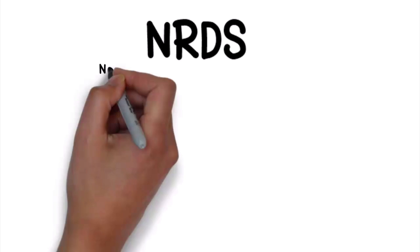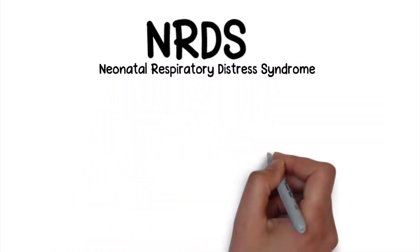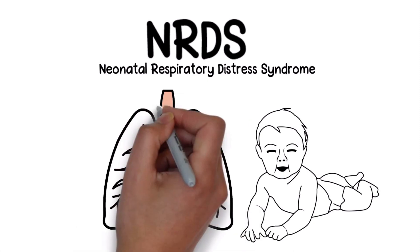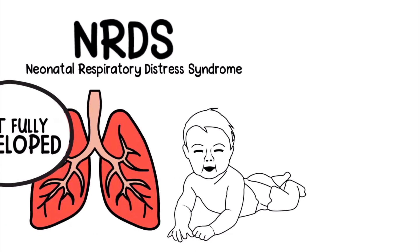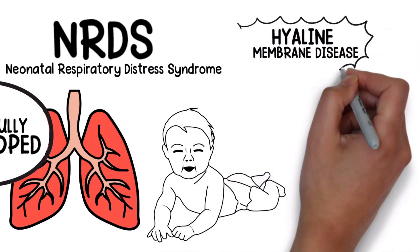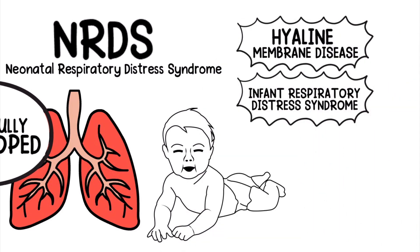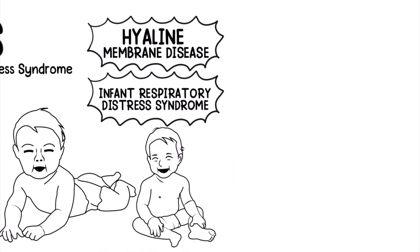NRDS stands for neonatal respiratory distress syndrome, a condition in infants that occurs when the lungs are not fully developed. It is very common in premature infants. You may also hear it referred to as hyaline membrane disease or infant respiratory distress syndrome, but in general these terms can be used interchangeably.